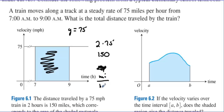Miles per hour, multiplied by the time which is hours. The hours cancel and we're left with 150 miles.